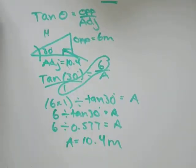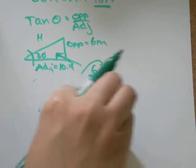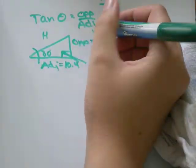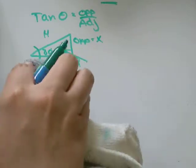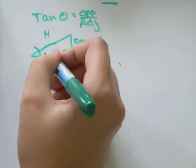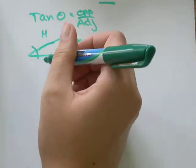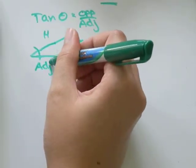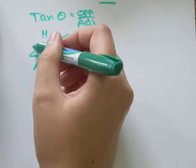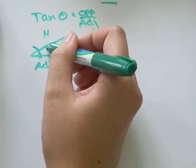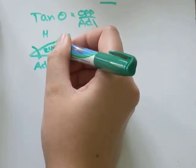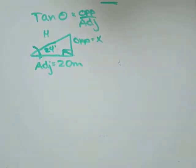Let's do another question where it's the opposite side that's our unknown. So, let's say that the adjacent is equal to 20 meters. Our angle here, theta, let's say that's equal to 24 degrees. And this time we're solving for opposite.